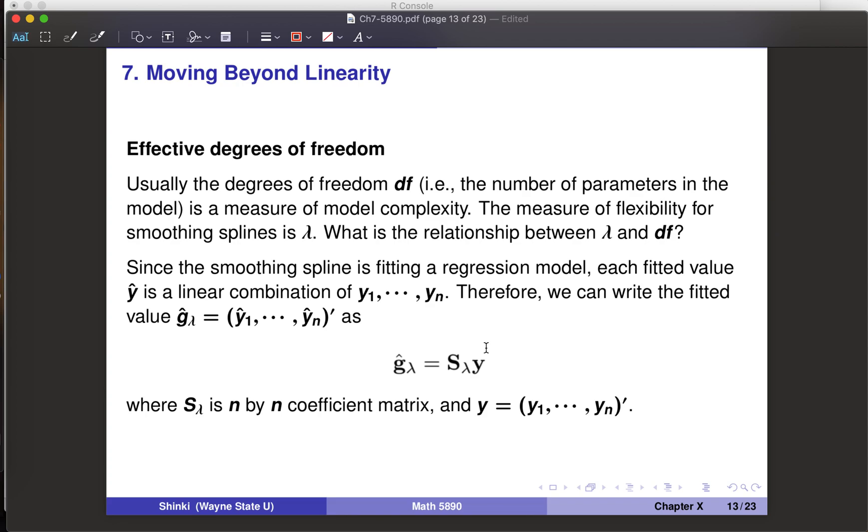One question: the effective degrees of freedom. Usually the degrees of freedom, df, the number of parameters in the model, is a measure of model complexity. But with smoothing spline, since we have many knot points, we are not exactly sure what's the measure of flexibility or complexity. It's basically determined by lambda, but what's the relationship between lambda and df?